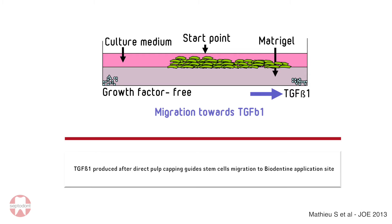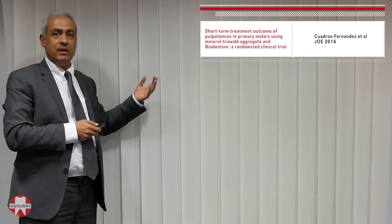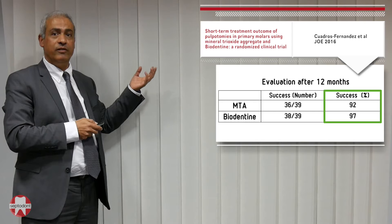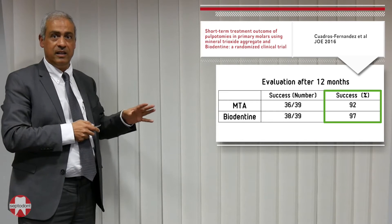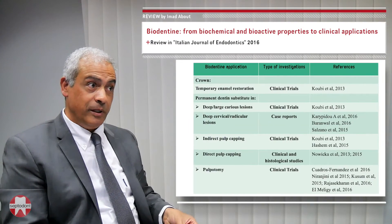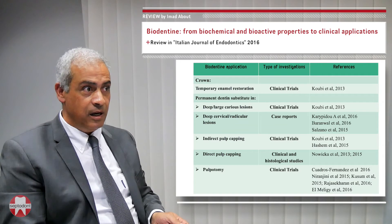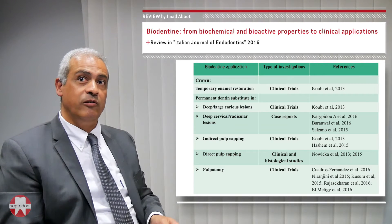Since Biodentine can be applied to any surface area, it can also be used for pulpotomy. Recent studies show Biodentine applied in pulpotomy of primary teeth achieves a very high success rate — even higher than MTA, though the difference is not statistically significant. Several additional papers on pulpotomy and other applications have appeared since Biodentine's release in late 2010.